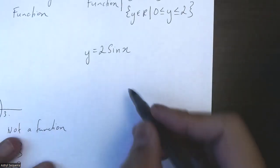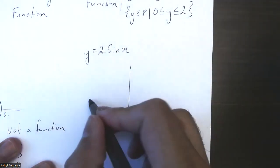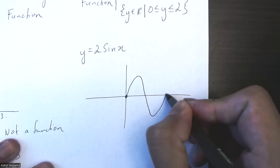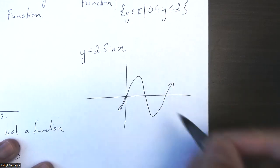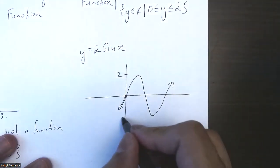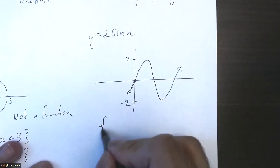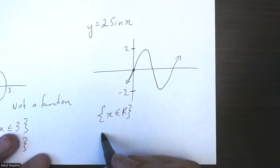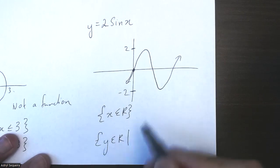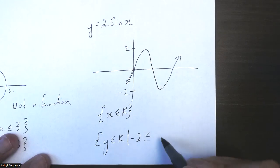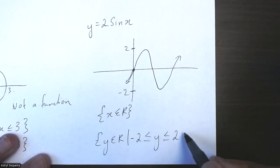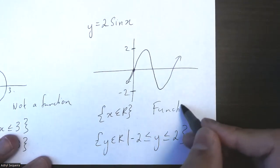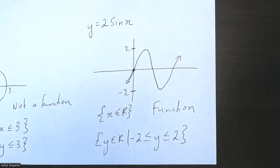The last one is a regular sine graph with an amplitude of two. A sine graph starts on the axis, goes to max and min, and continues forever in both directions. The amplitude is two, so the maximum is two and the minimum is negative two. The domain for all sine functions is all real numbers. The range is between -2 and +2. All sine functions are functions and pass the vertical line test.